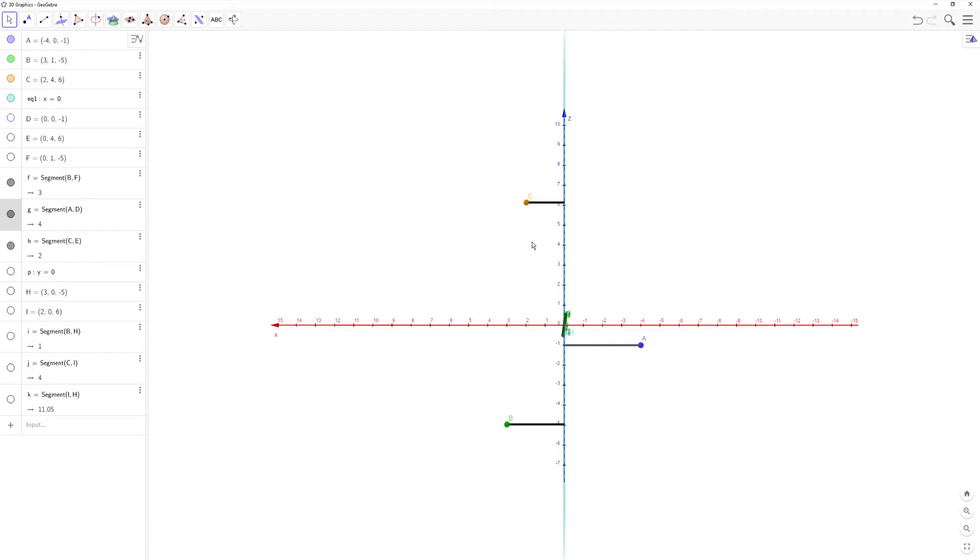Whichever one has the shortest segment is the one that's closest to the yz-plane. And as you can see, we found C was 2 units away, and you can look here, C is also 2 units away. So let's go back to the problem.